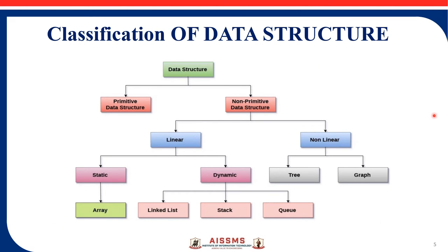Now the very important classification of data structures. Data structure is divided into two types: primitive data structure and non-primitive data structure. Non-primitive is again divided into linear and non-linear. Linear has static and dynamic; non-linear has tree and graph. Static includes array, and dynamic includes linked list, stack, and queue. Primitive data structures are those which are predefined ways of storing data by the system — for example, integer, character, and float.